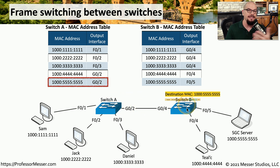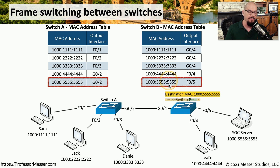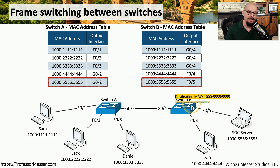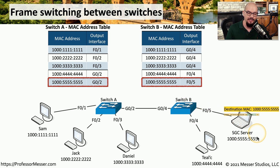On the next switch, the same lookup process occurs. Switch B examines the destination MAC address, determines that MAC address is associated with interface FastEthernet 0/5, and sends that traffic down that interface to the destination device.